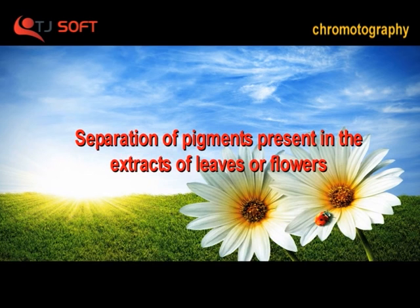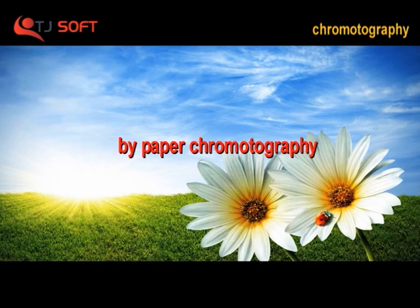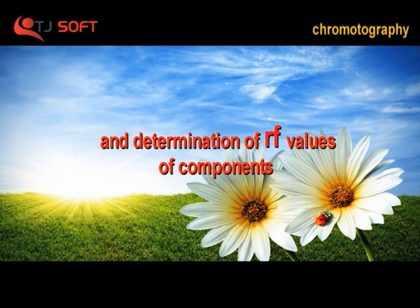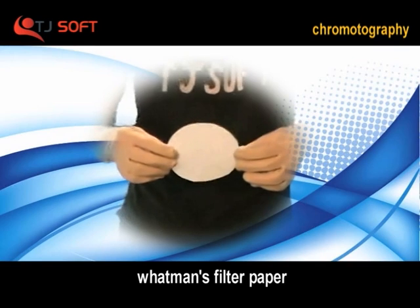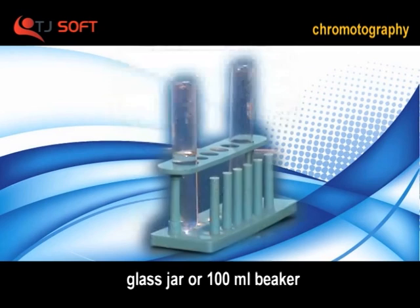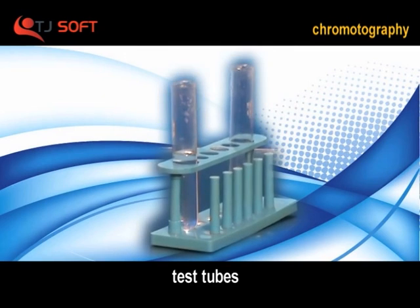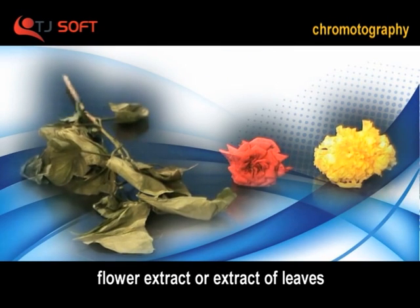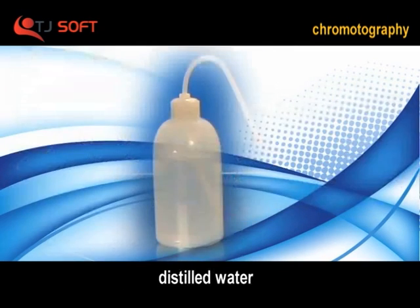Experiment: Separation of pigments present in extracts of leaves or flowers by paper chromatography, and determination of RF values of compounds. Apparatus: Whatman filter paper, glass jar or 100 ml beaker, test tubes, flower extract or extract of leaves, distilled water.